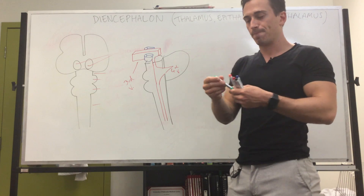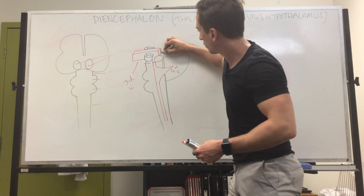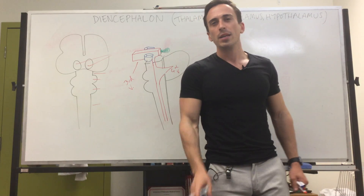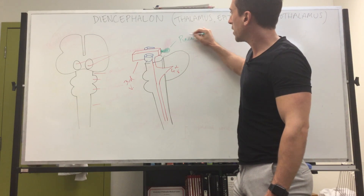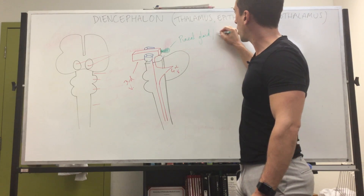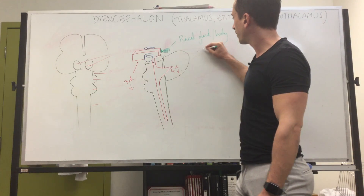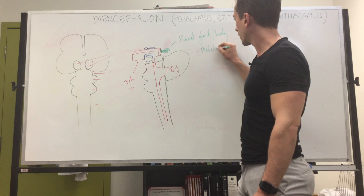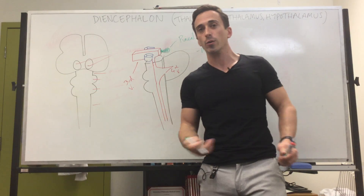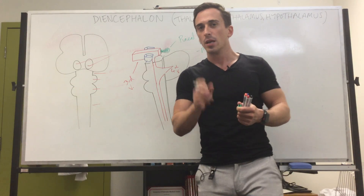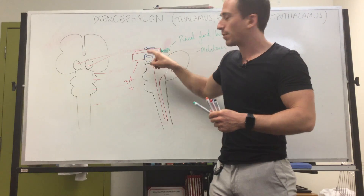At the back of this third ventricle there is a swelling, and this swelling is something you may have heard of before — the pineal gland, also known as the pineal body. Remember what the pineal gland does: it releases melatonin, which is a derivative of serotonin. Melatonin helps us with our sleep-wake cycles and plays an important role in circadian rhythm.